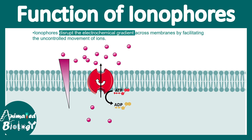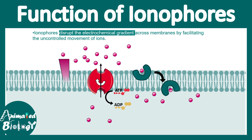Obviously, the electrochemical gradient that was built up would be totally dissipated, because the ionophore can take ions from outside and bring them back inside. The gradient would be dissipated and the proton motive force present in that gradient cannot be used for other biological purposes.